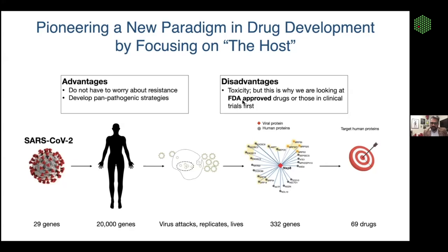As you just heard, there are about 30 genes in SARS-CoV-2 compared to 20,000 genes in each one of our cells. This virus cannot exist by itself — it needs our cells, our genes, our proteins in order to live, replicate, and infect our cells.